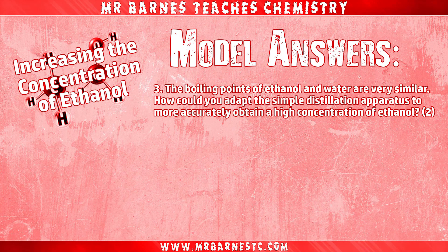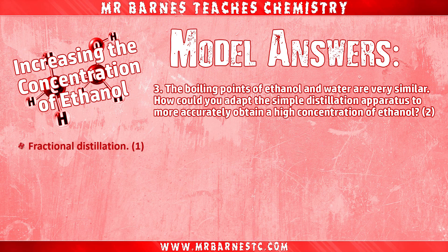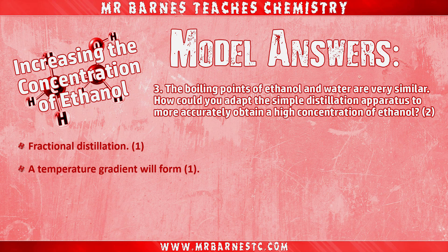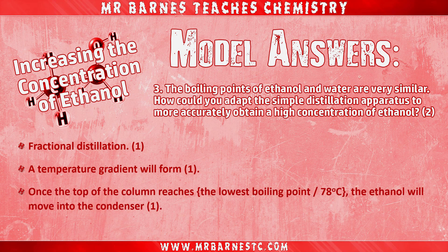Question three: How could you adapt the simple distillation apparatus to more accurately obtain a high concentration of ethanol? Your first mark is for naming the technique — fractional distillation. The second mark is for saying a temperature gradient will form, and once the top of the column reaches the lowest boiling point, 78 degrees, ethanol will move into the condenser. That's your third mark, which leaves behind the water.